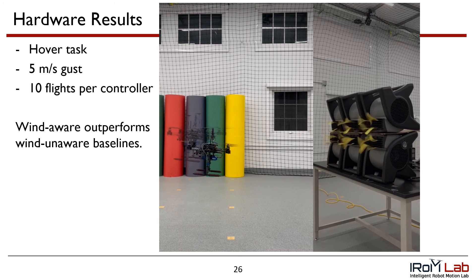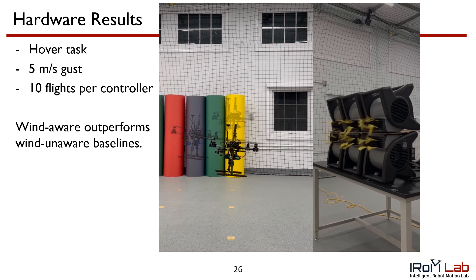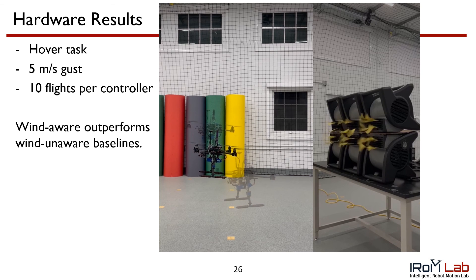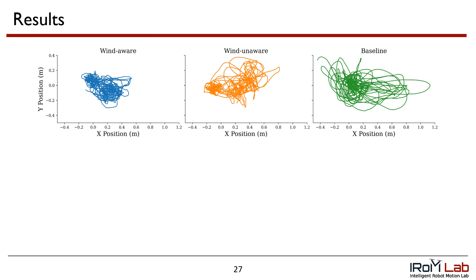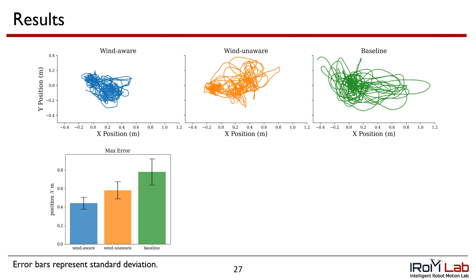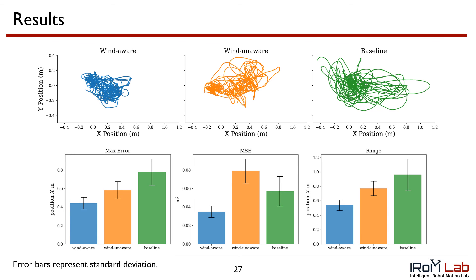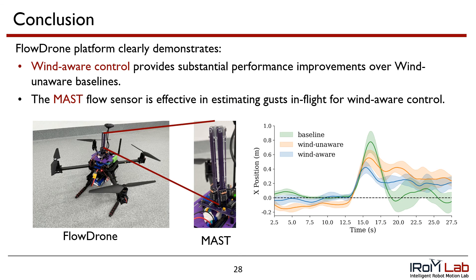As shown in this overlaid video, where wind-aware is the most opaque, wind-aware outperforms both wind-unaware baselines in maintaining a hover position. In addition to having the smallest deviation from the gust and the smallest variance in hover position, wind-aware also performed the best in terms of max error, mean squared error, and overall range across the trajectory.